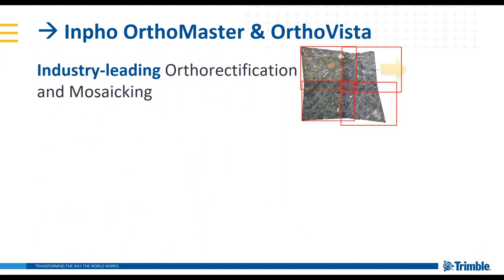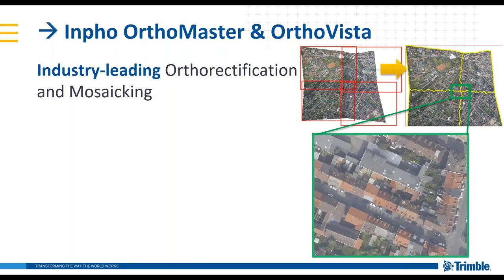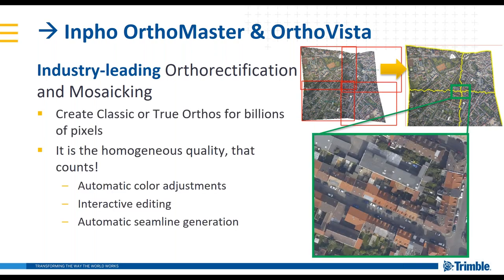Once the surface is prepared, the next step is Inpho OrthoMaster and OrthoVista software. OrthoMaster allows you to create a classic or true ortho. Once those images are mosaicked in OrthoVista, we have automatic color adjustments and automatic seam line generation that will produce a final ortho that is homogenous in quality. There is also an interactive seam line editor if you choose to alter how the seam lines proceed through the project.